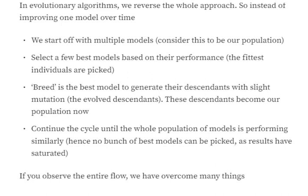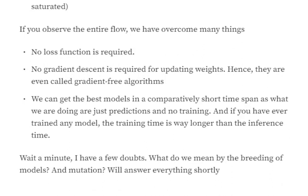To summarize: we take a pool of models initialized with random weights, directly calculate metrics over some sample dataset, select the best N models, cross-breed them to get new weights for the same model architecture, and repeat the cycle until the population metrics are quite similar for all members. This approach overcomes the traditional training limitations — we don't require a loss function, no gradient descent is required to update weights. Hence, these are also called gradient-free algorithms. Additionally, training time can be very low, since inference time is much shorter than training time.